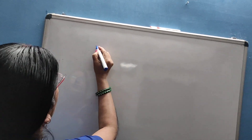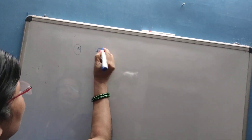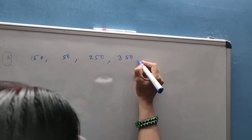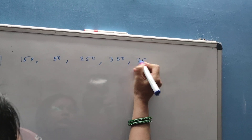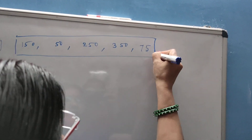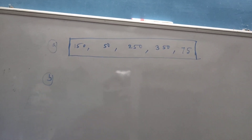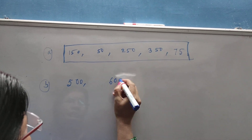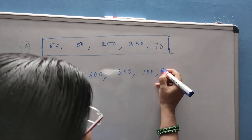Now I am writing some number series and you have to find out the greatest number and the smallest number of the series. Series A: 150, 50, 250, 350, and 75. Series B: 500, 600, 300, 100, and 900.